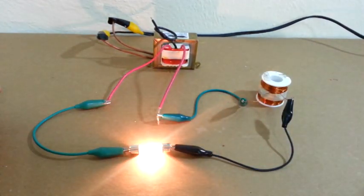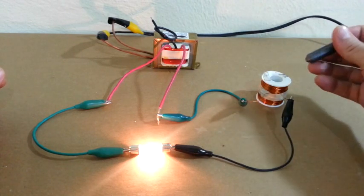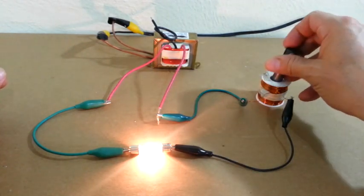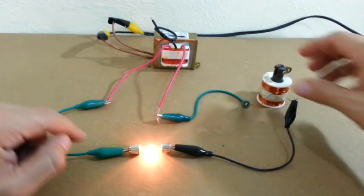And if we put an iron core in the inductor, the inductance will be higher and the brightness is even less.